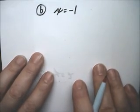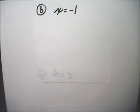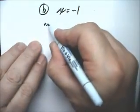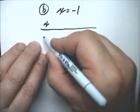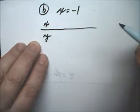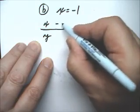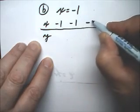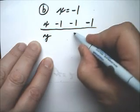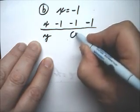Part b of this example is x equals negative 1. This is very similar. If I make a table of values with x and y, x will always be negative 1, and y can be anything.